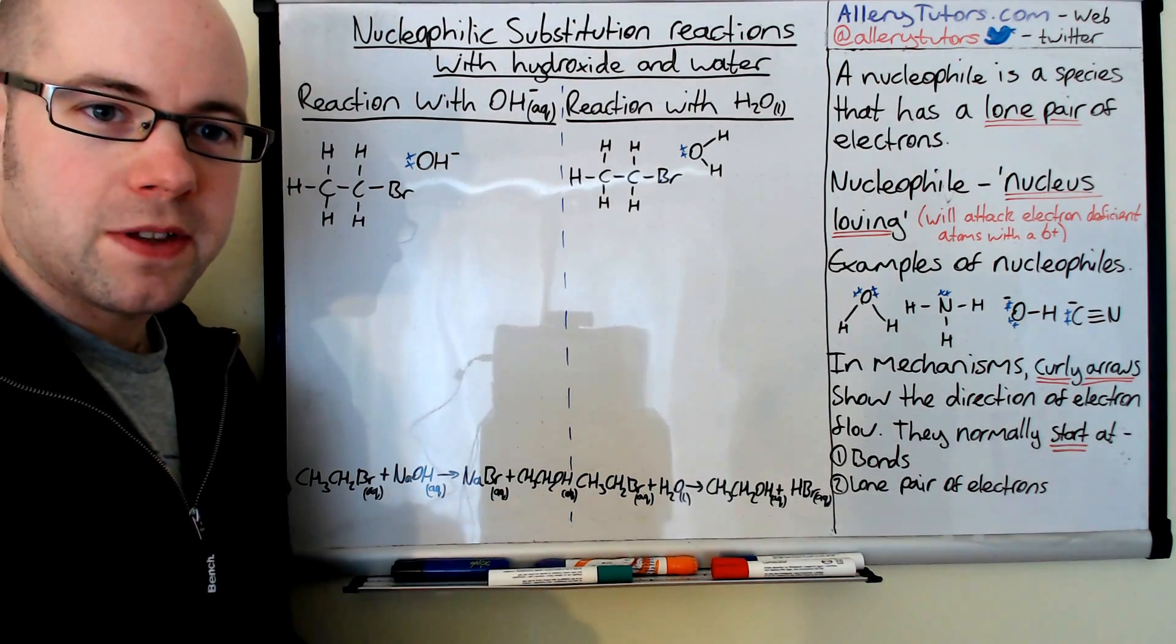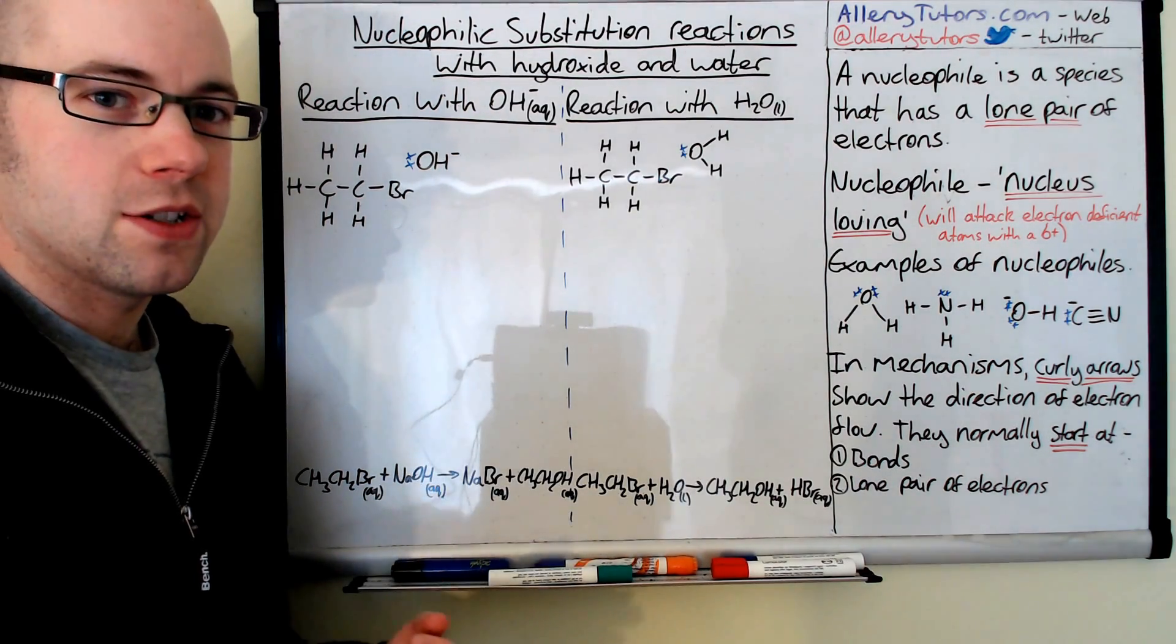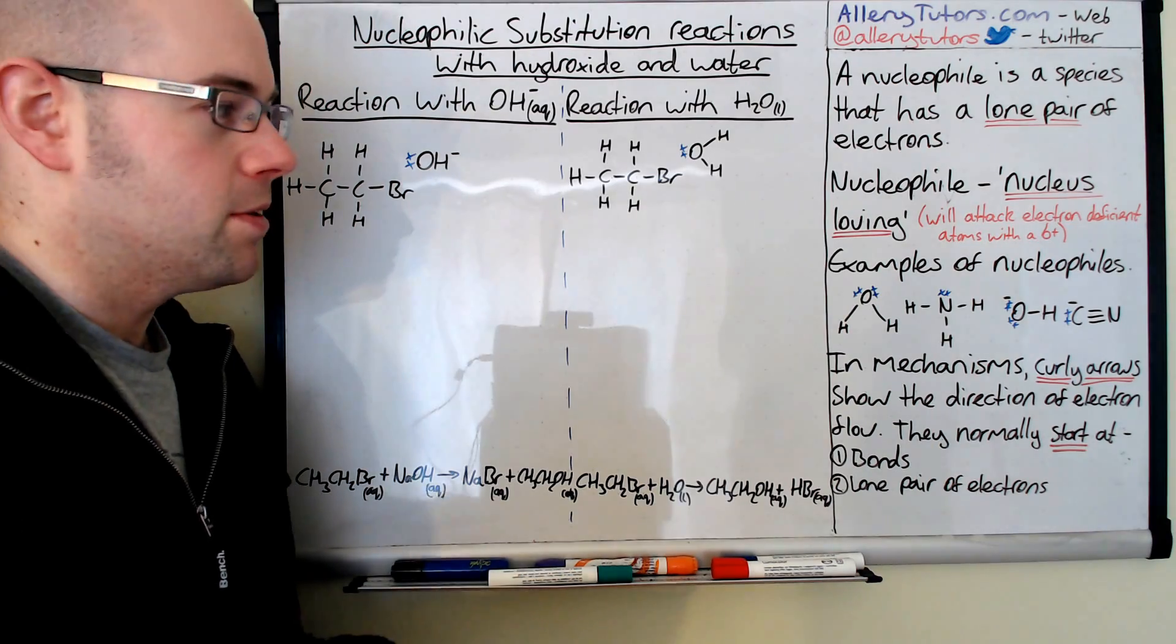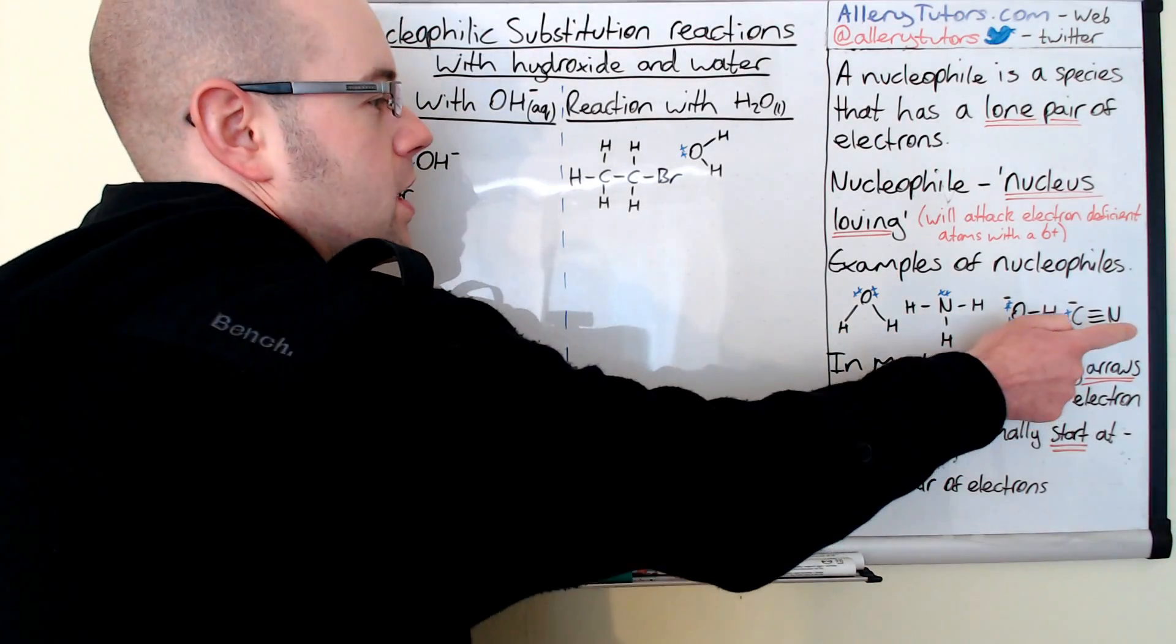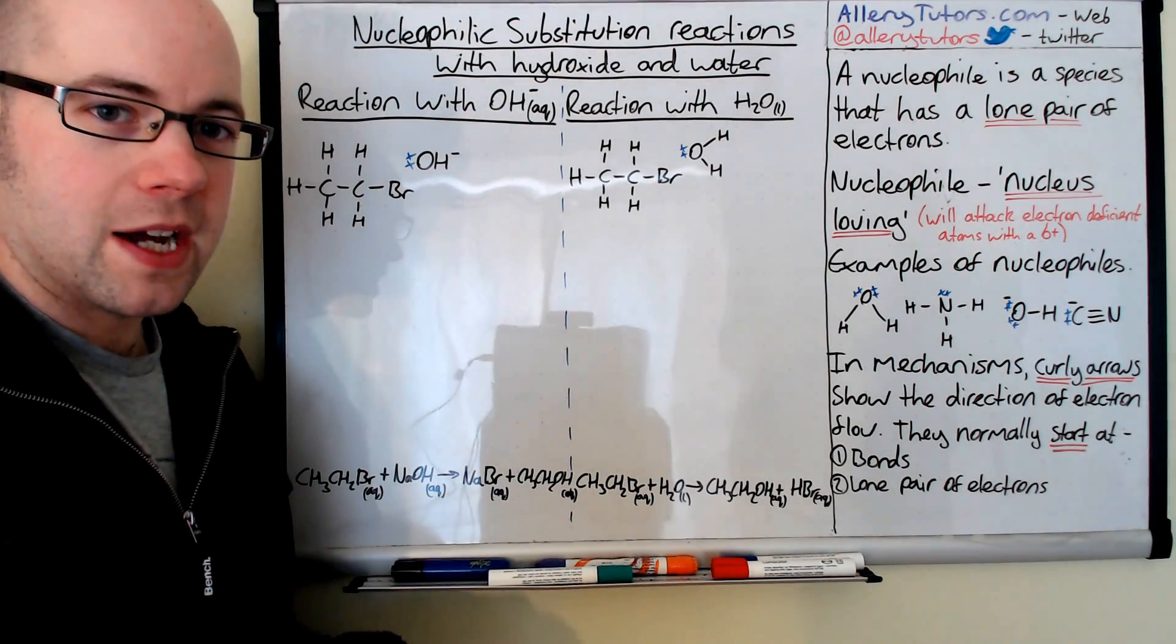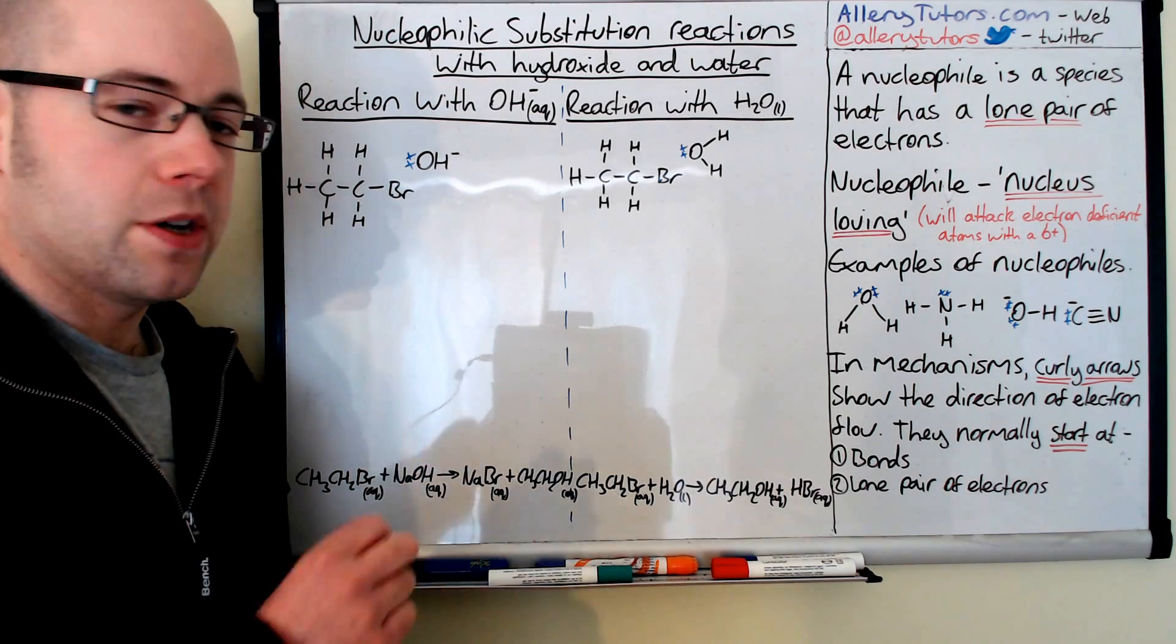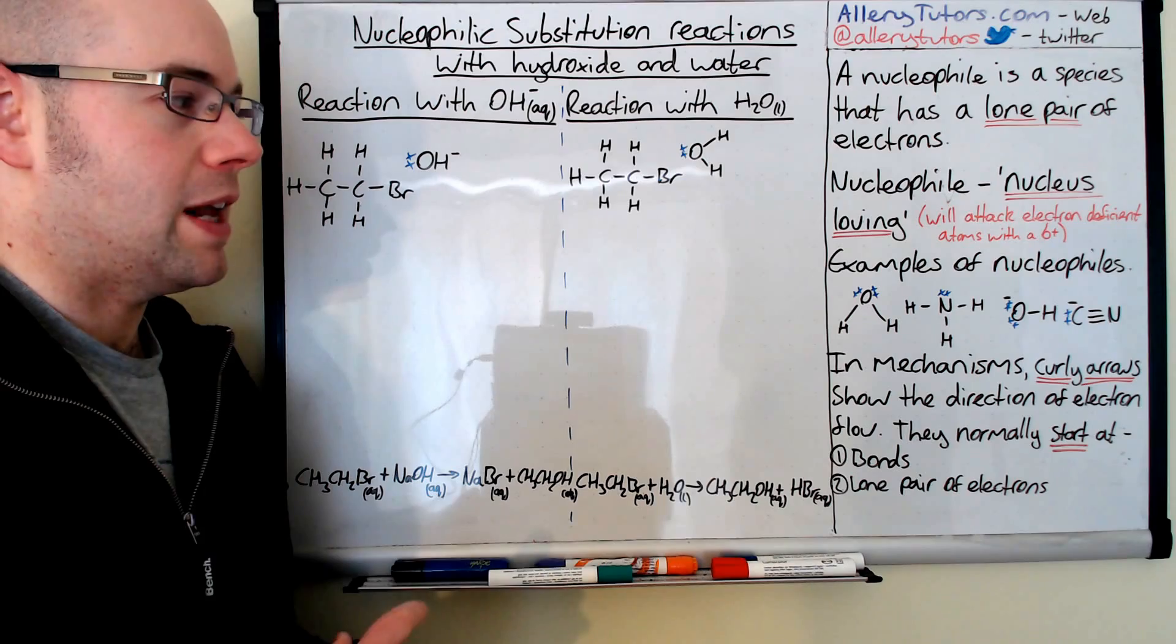Some examples of nucleophiles that you may come across - it depends on the example, you need to check the specification to make sure you know the mechanisms that you do need to know. Examples are water, ammonia, hydroxide ions and cyanide ions. All of these have a lone pair of electrons. Two of them have a negative charge and two of them don't, so they don't always have to have a negative charge. The crucial part is the lone pair of electrons.